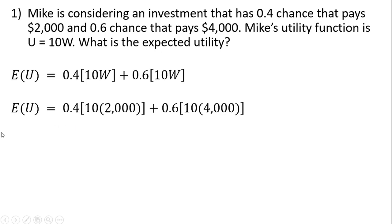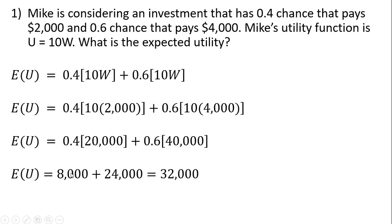In our next step, we're going to plug in for W. There's a 40% chance that W will be $2,000, so I make that substitution. There's a 60% chance that W is $4,000, making that substitution. Now simplifying: 10 times 2,000 is 20,000, 10 times 4,000 is 40,000. Simplifying further, the expected utility is 32,000.